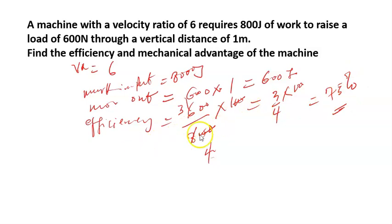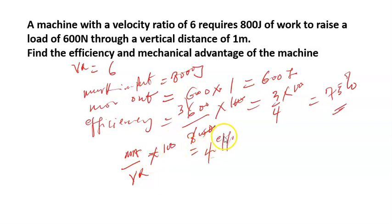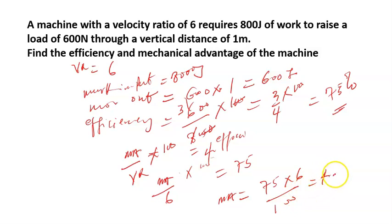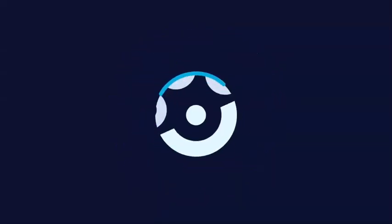The efficiency of that system is 75 percent. Now let's calculate the mechanical advantage. Remember that MA over VR, times 100, is the same thing as the efficiency of the system. So my MA over VR of 6, times 100, is equal to 75. My MA will be equal to 75 times 6, over 100, which is the same thing as 4.5. I hope with this lesson you understand how to work with the simple machine, and in subsequent lessons I will explain further. Thank you for staying with us.